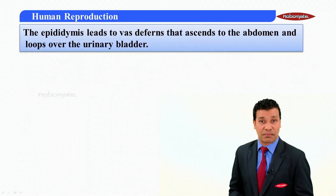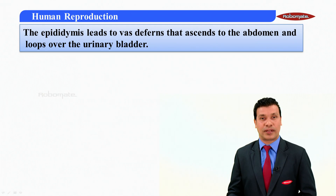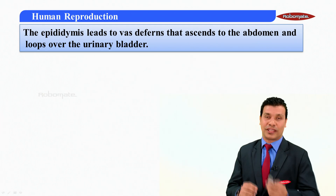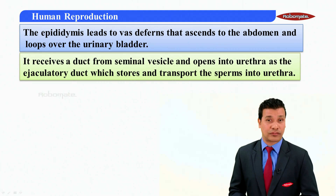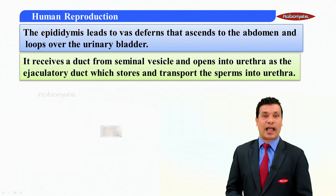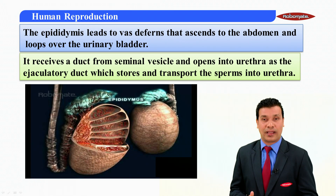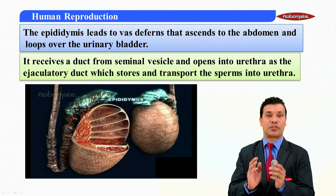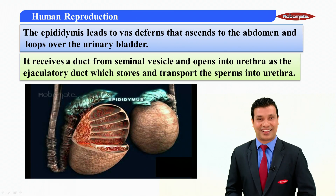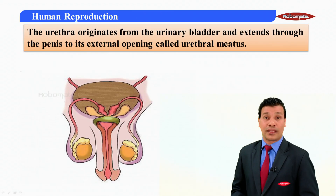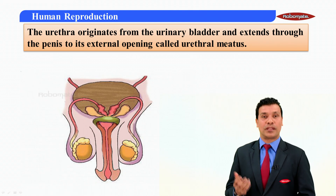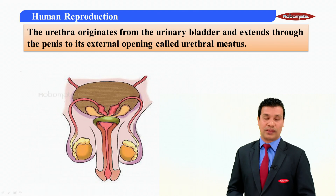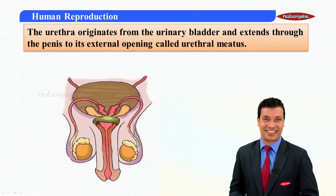The epididymis leads to the vas deferens that ascends to the abdomen and loops over the urinary bladder. It receives a duct from the seminal vesicle and opens into the urethra as the ejaculatory duct, which stores and transports the sperms into the urethra. The urethra originates from the urinary bladder and extends through the penis to its external opening called the urethral meatus.